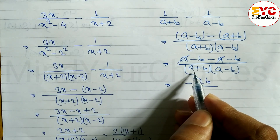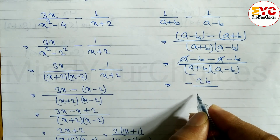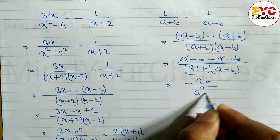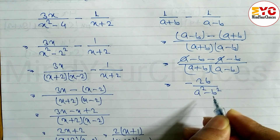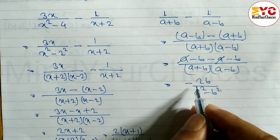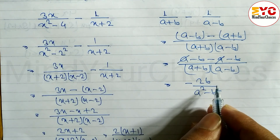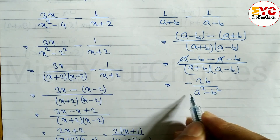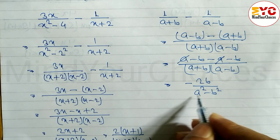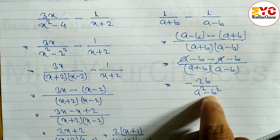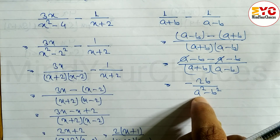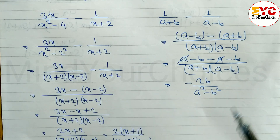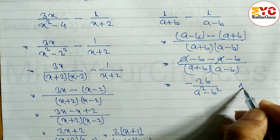So we have minus 2b divided by (a plus b)(a minus b), which we can write as minus 2b divided by (a squared minus b squared). You can leave the answer in this form, or you can multiply through by the minus sign and write it as 2b divided by (b squared minus a squared).